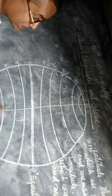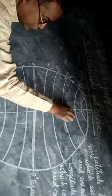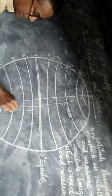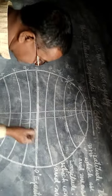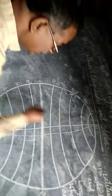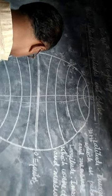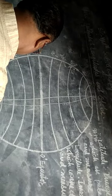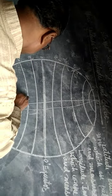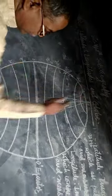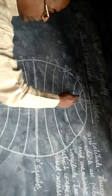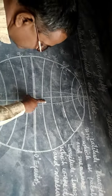यह North Pole और South Pole को Connect करती है, और इसी तरह यह लाइन भी North Pole और South Pole को Connect करती है। यह मेजर करती है East, और यह भी North Pole और South Pole को Connect करके West मेजर करती है।